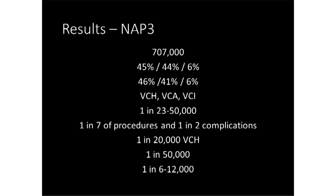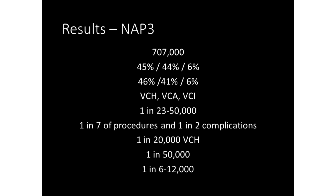As an illustration: for NAP3 we looked at 700,000 spinals and epidurals — 45% spinals, 44% epidurals, 46% for obstetric indications and 41% perioperative care. The main complications were vertebral canal haematoma, abscess, and ischaemia. The overall risk of a complication from any central or axial block was one in 25,000 to 50,000. But we noticed that perioperative cases, although only one in seven of procedures, accounted for half of the complications — a high-risk group, particularly epidurals. The risk of a vertebral canal haematoma is one in 20,000; permanent harm after a spinal around one in 50,000; and after a perioperative epidural about one in 6,000 to one in 12,000.